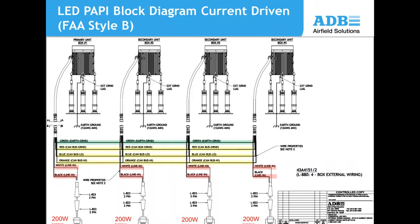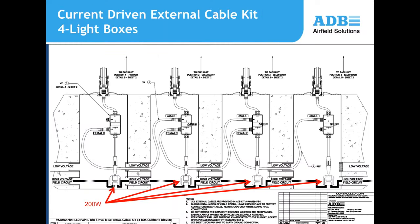For the current-driven PAPI system, cables run between each light unit and each requires a 200-watt isolation transformer to provide the necessary operating current. The isolation transformers are visible inside the base can and are connected to the connection units that are part of each PAPI light unit.